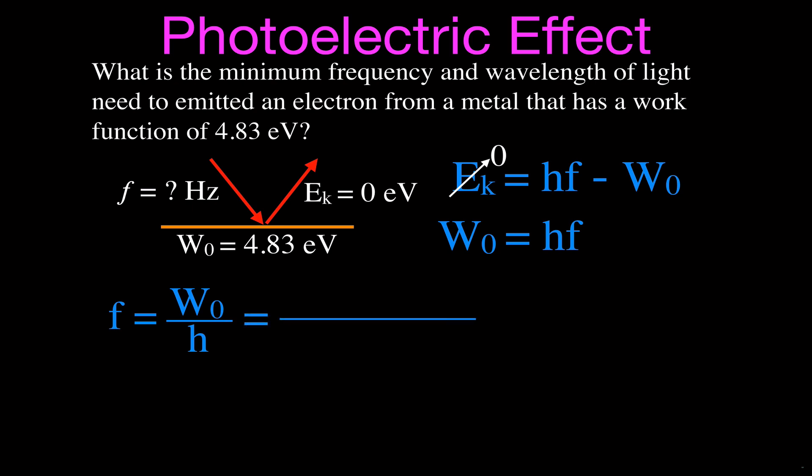So we can plug those values in. Planck's constant is 6.63 times 10 to the minus 34 joule seconds. Now, the work function is energy, and we have joule seconds, Planck's constant in joule seconds. We want to put this energy in here for the work function, but in order to cancel the energy, this is joules and this is electron volts.